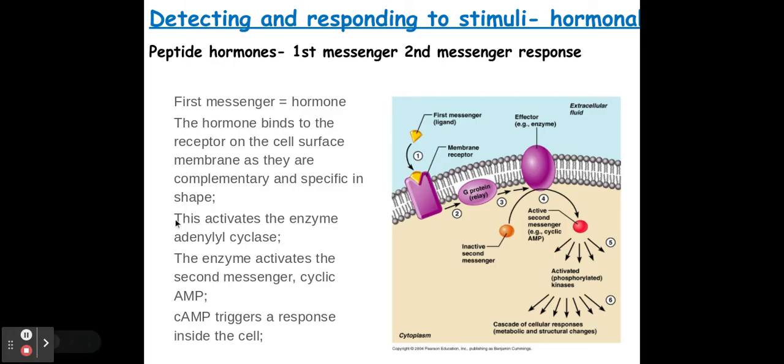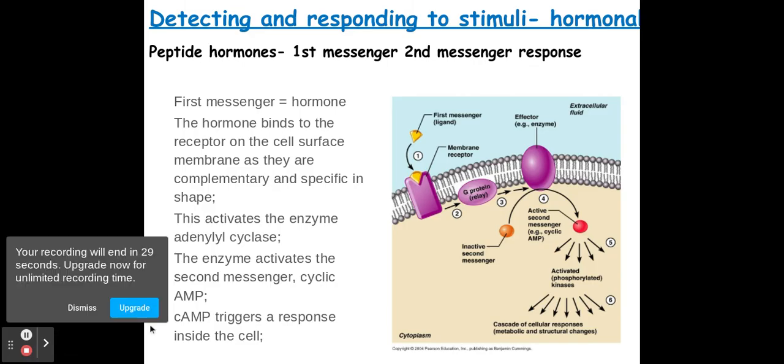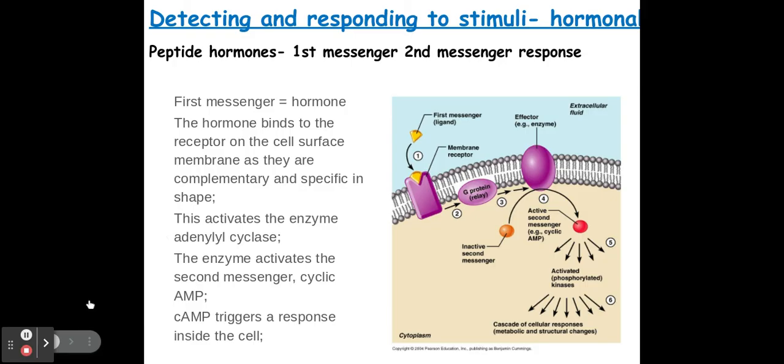All this on the left-hand side here is taken directly from the mark scheme. Adenyl cyclase will then activate the second messenger, which is cyclic AMP. So it goes from inactive to an active cyclic AMP. So this is my second messenger here, my cyclic AMP. Now my cyclic AMP or cAMP will then trigger a response inside that cell, and depending upon what cell it is will depend upon what that response may be. For example, a pancreatic cell will respond differently to a liver cell.